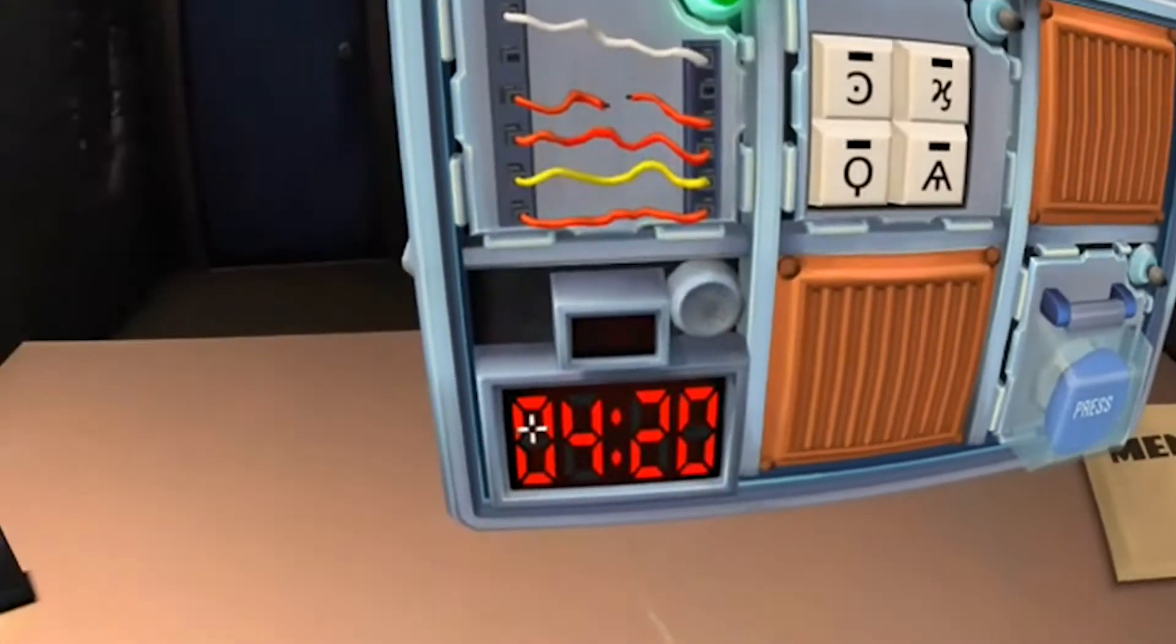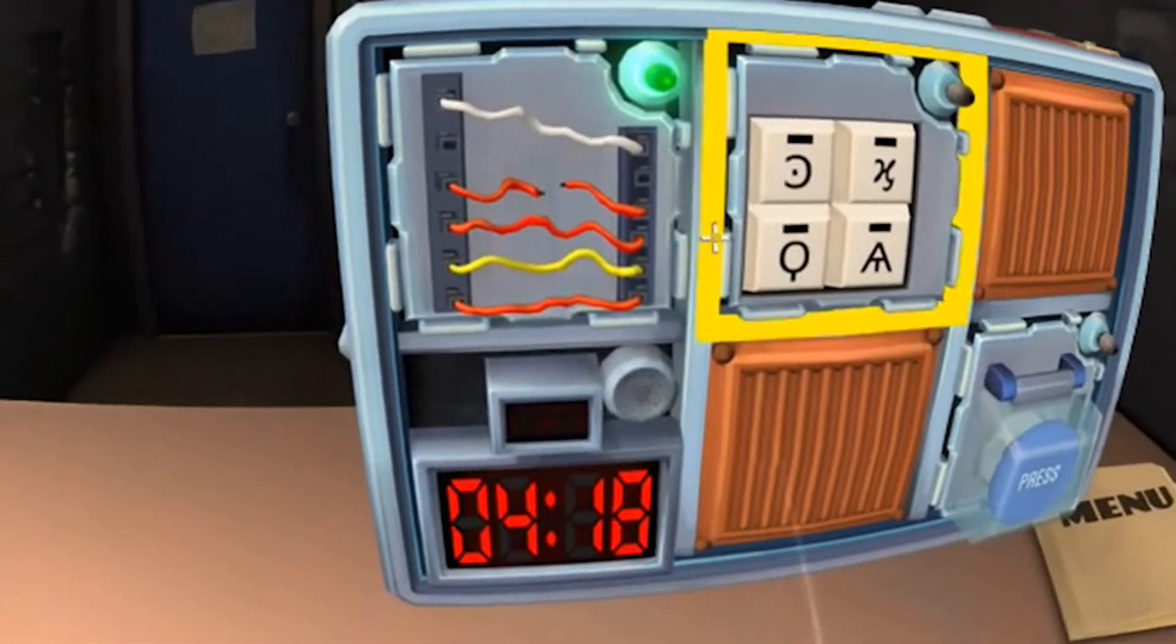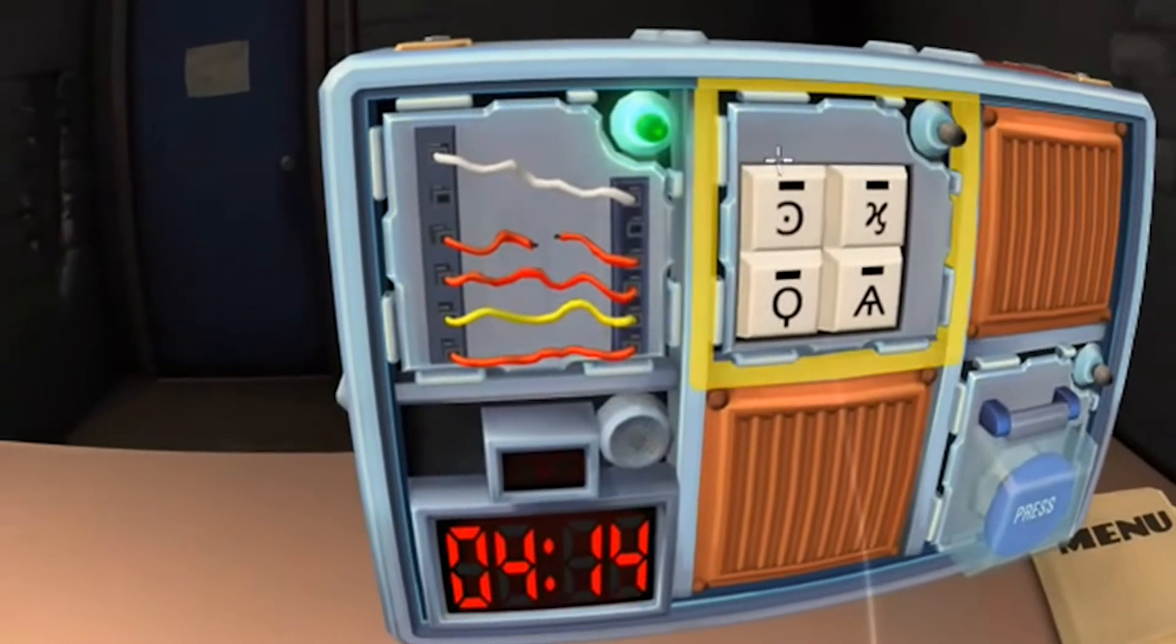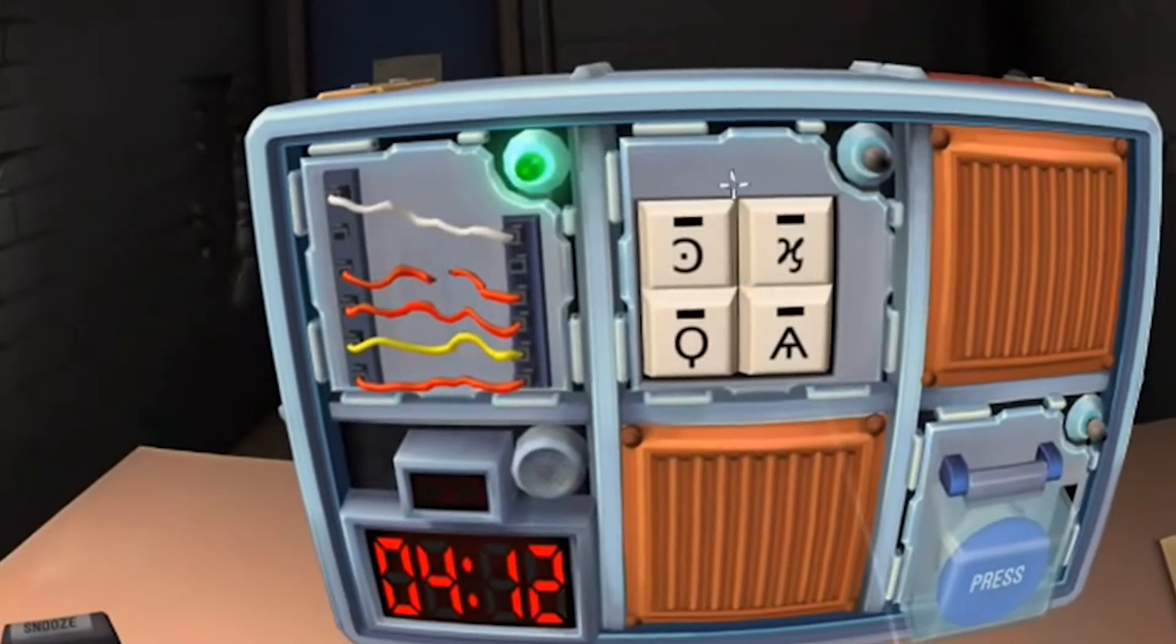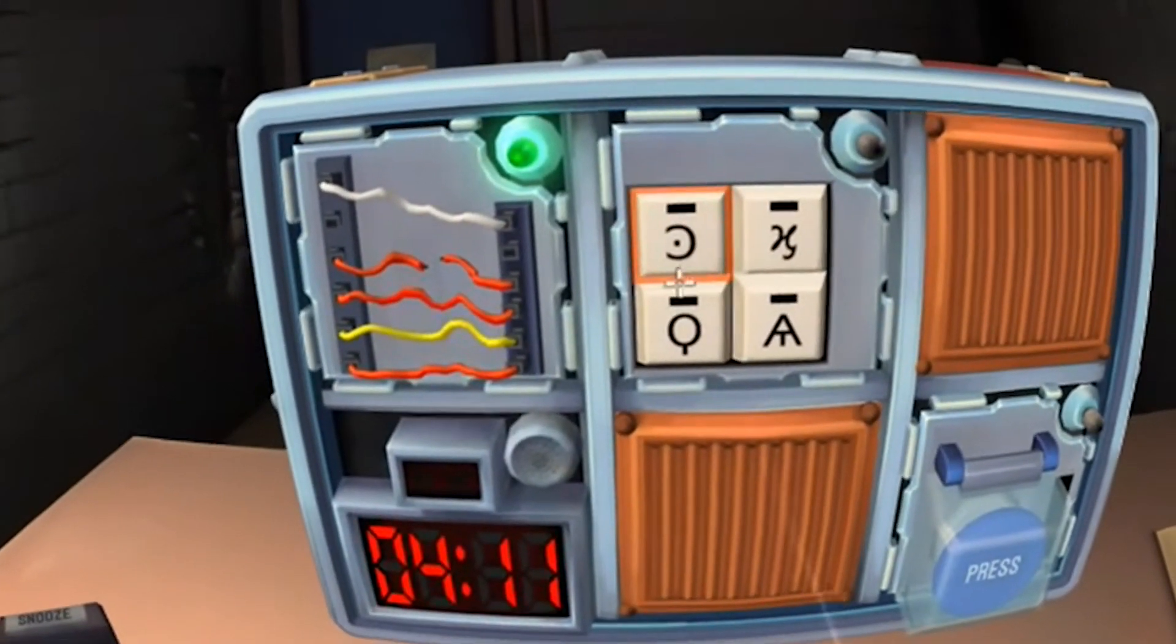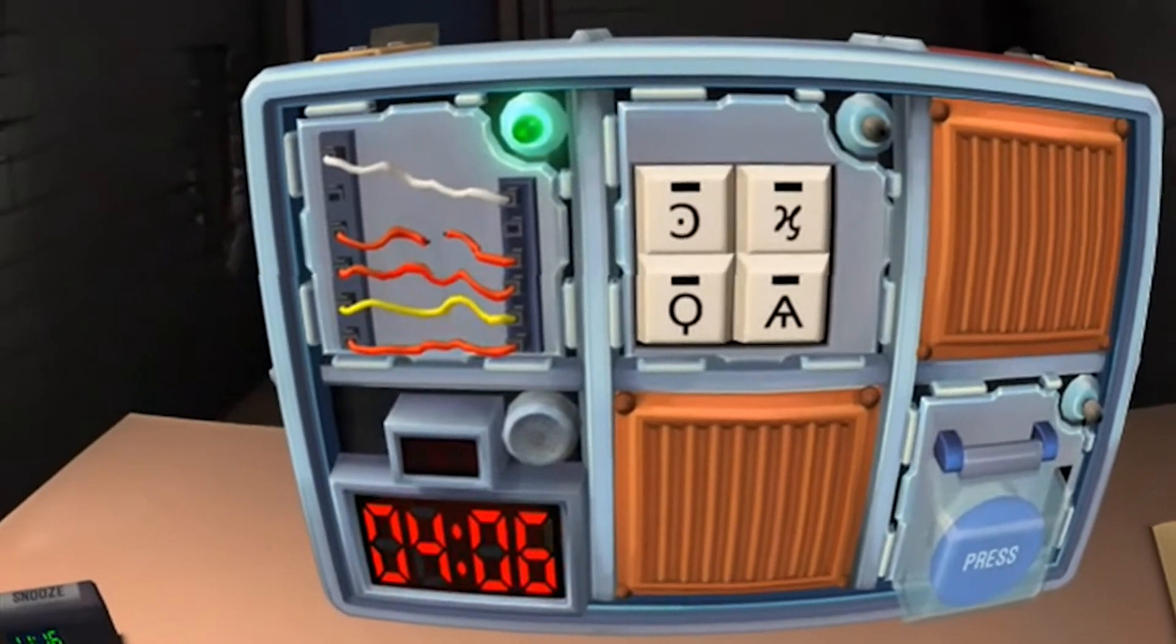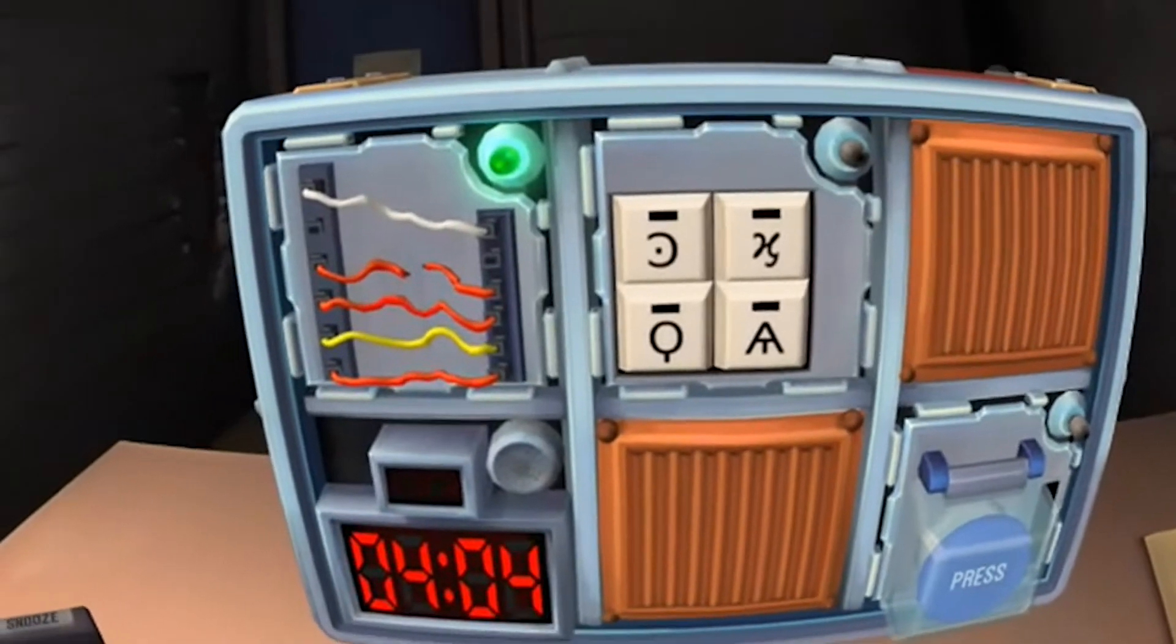The player in VR is located in an office room which is equipped with an armed bomb that counts down from five minutes. The player can pick up the bomb with a motion controller and rotate it in all directions to inspect it. The bomb consists of several modules that each have to be defused in order to stop the bomb from exploding.